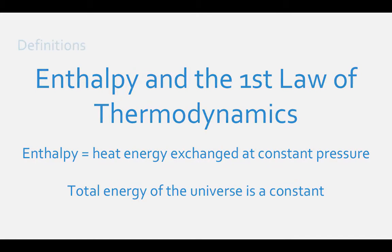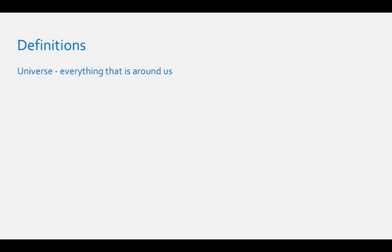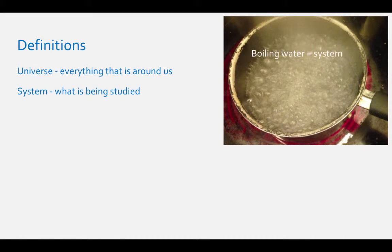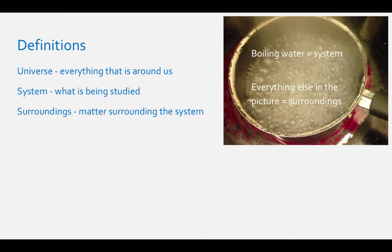First, let's define some terms we introduced already. The universe is everything we see around us, and that which we cannot see. For the sake of this chemistry class, there are two parts to every universe. The system is what is being studied. If you are boiling water, the system is the water, and the surroundings are everything else around the system — the pot, the oven, and even you. The universe is defined as the system plus the surroundings.